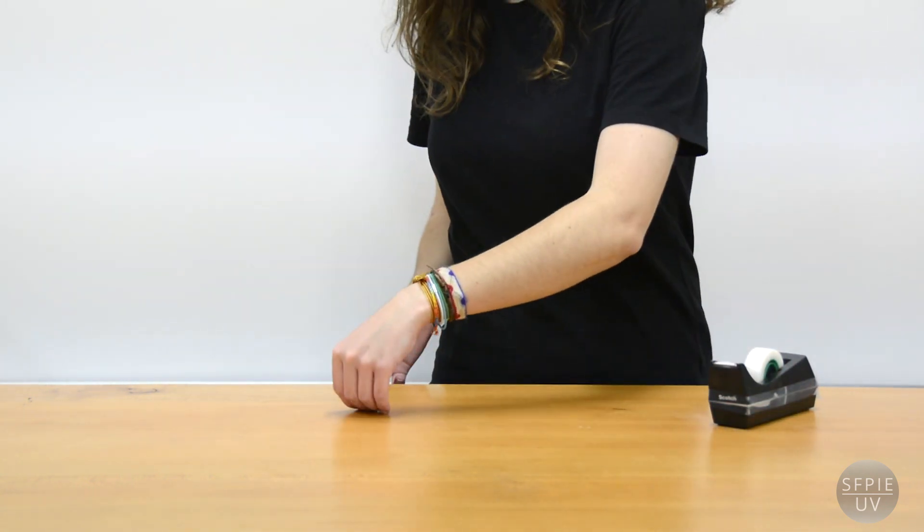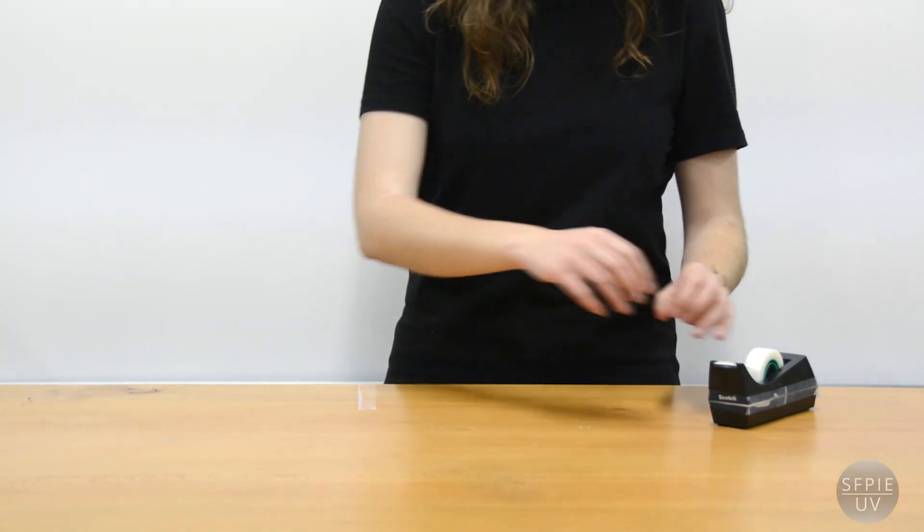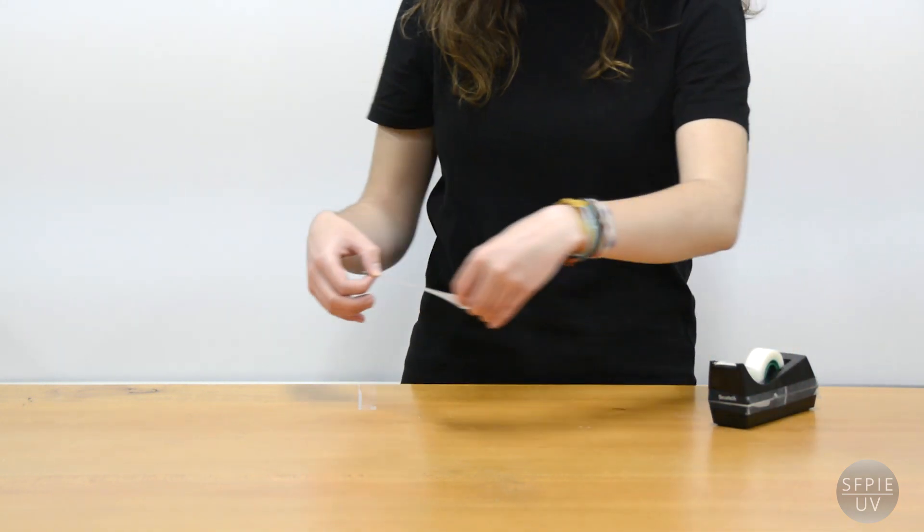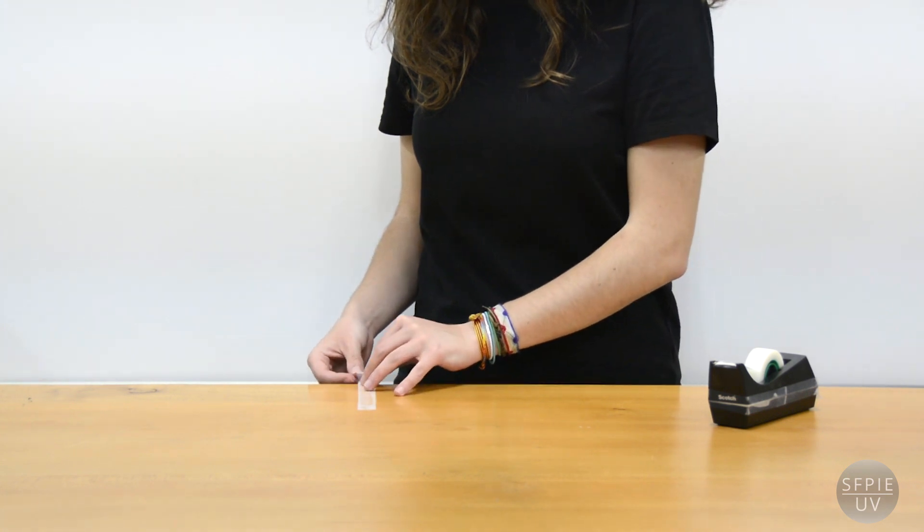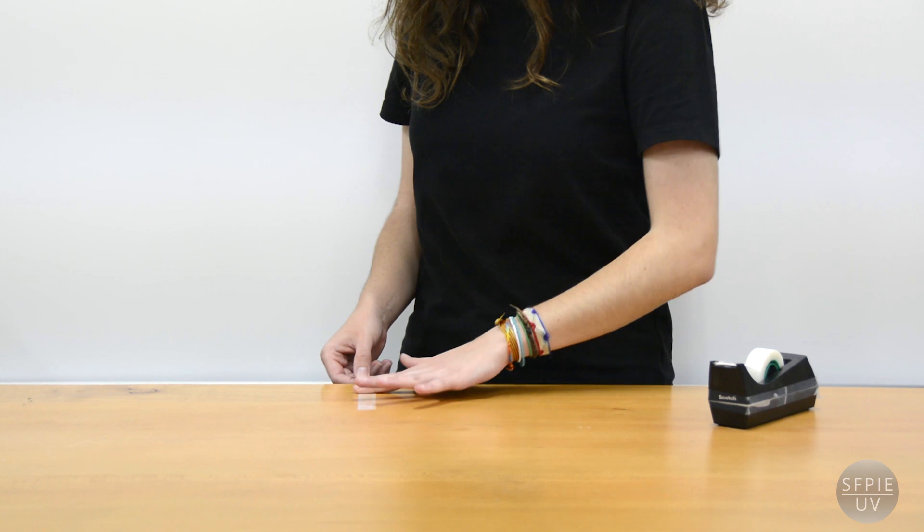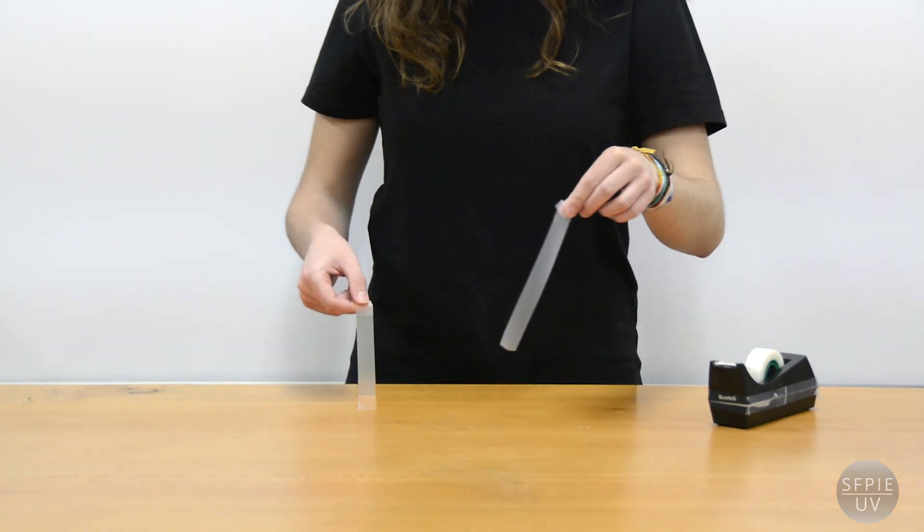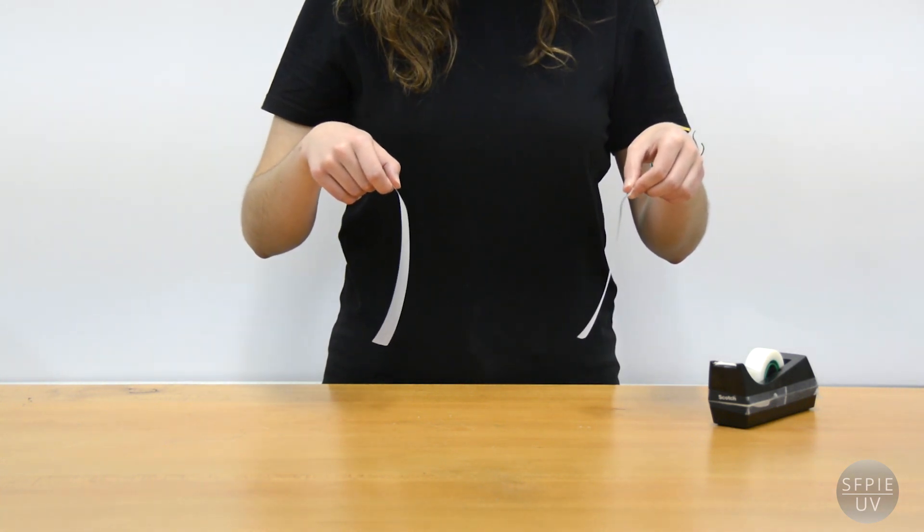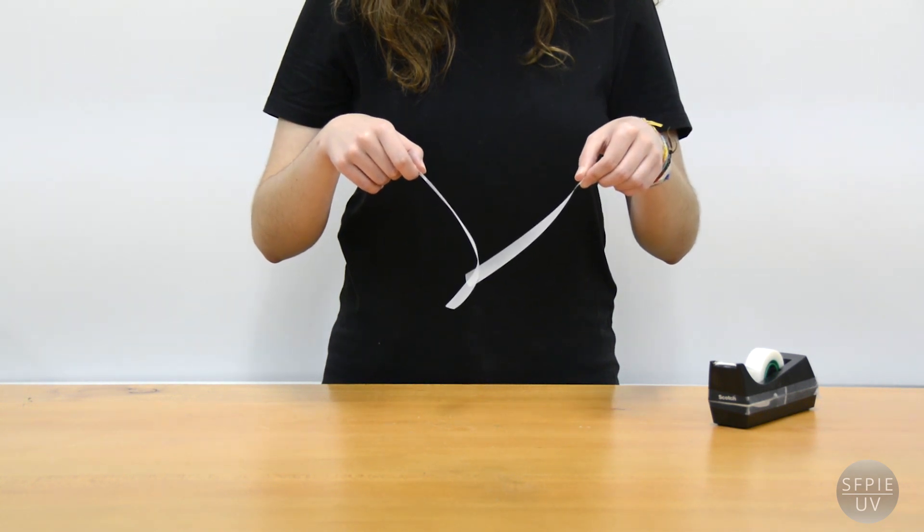We can obtain two pieces of tape with opposite charges by superimposing and then separating them. In this way, both pieces are loaded by friction with charges of the opposite sign, as can be seen by the attraction that they experience with each other.